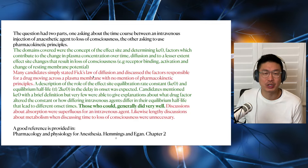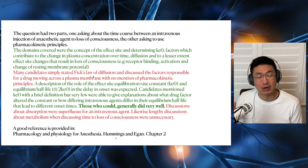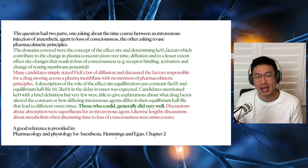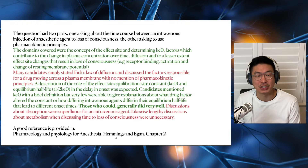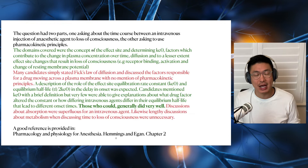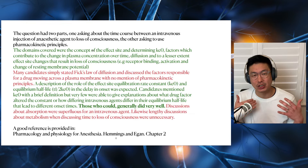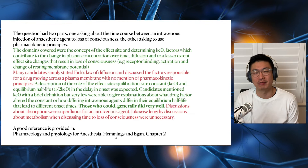A lot of candidates would have used the ADME structure — absorption, distribution, metabolism, excretion — and certainly absorption, metabolism, and excretion are less important for bolus dosing. A good reference is Pharmacology and Physiology for Anesthesia by Hemmings and Egan, Chapter 2, which is one of the core references we'll use today. We want to understand what the examiner is asking and how they interpret the concepts, and the best way is to go straight to the source from which they're drawing their questions and answers.